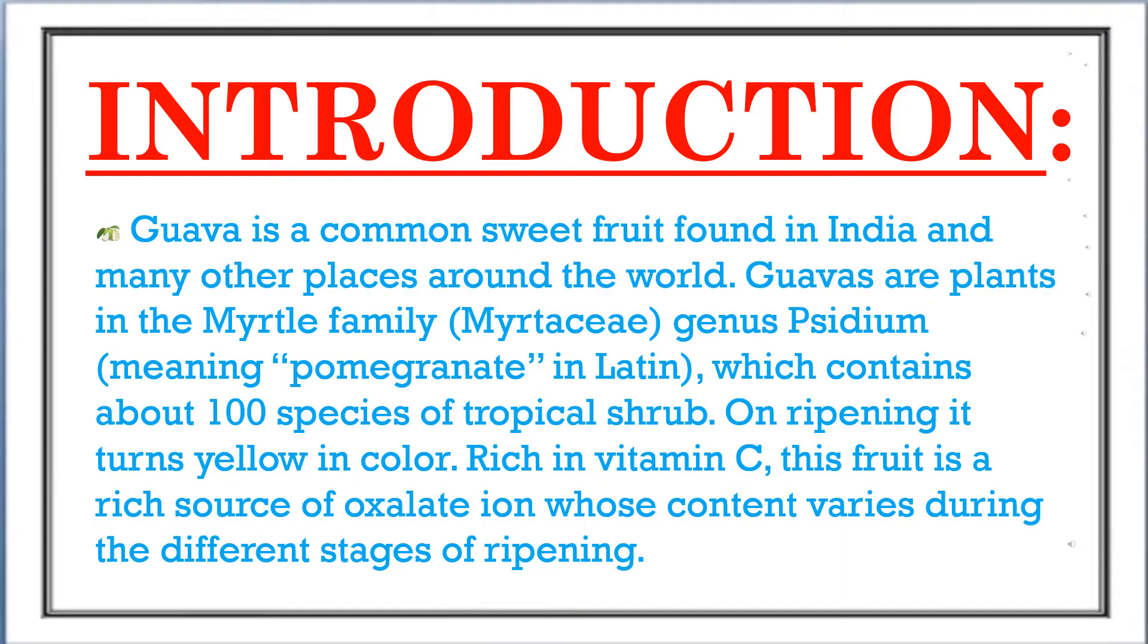Guava is a sweet fruit found in India and many other places around the world. Guavas are plants in the Myrtle family, Myrtaceae genus Psidium, meaning pomegranate in Latin, which contains about 100 species of tropical shrub. On ripening, it turns yellow in color, rich in vitamin C. This fruit is a rich source of oxalate ions whose content varies during the different stages of ripening.